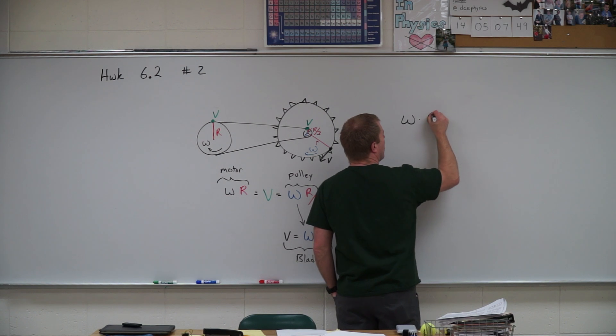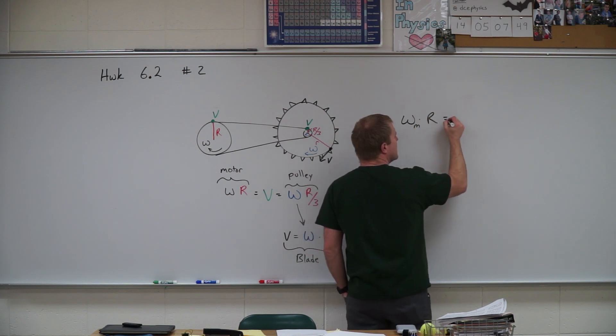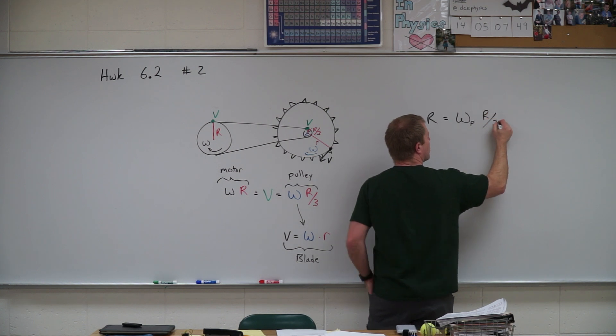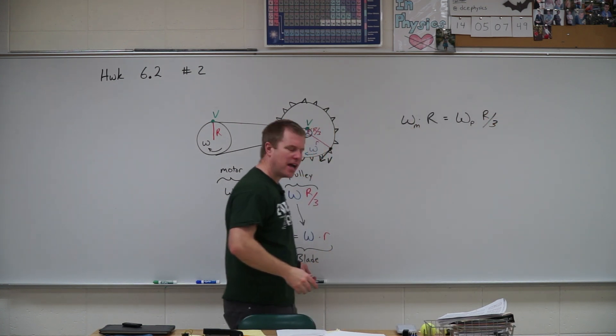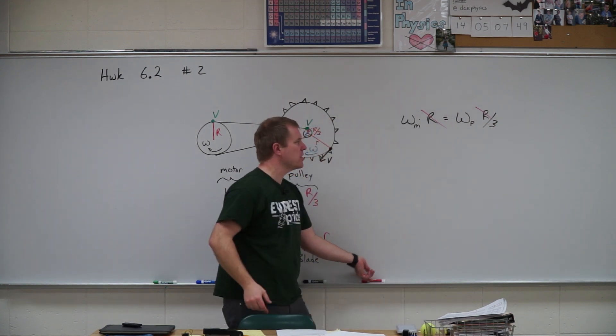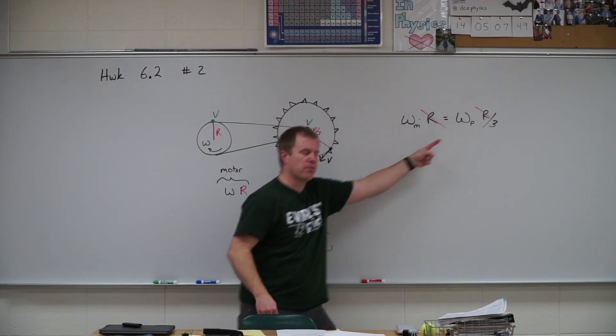So I have omega times r, and this is the motor, is equal to the omega of the pulley times r over three. And what do I have on both sides of my equation there? I have that r, so that cancels out for us.